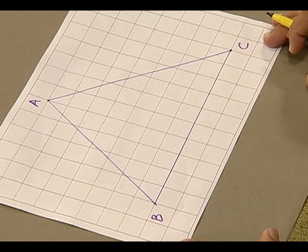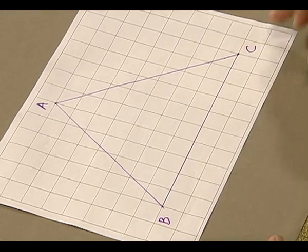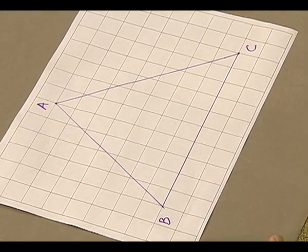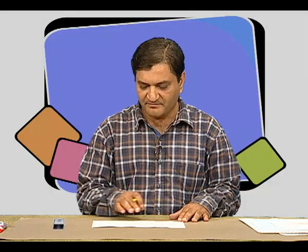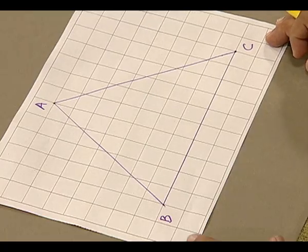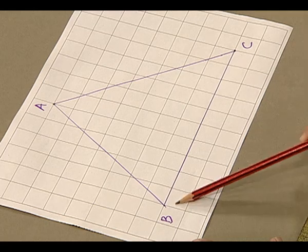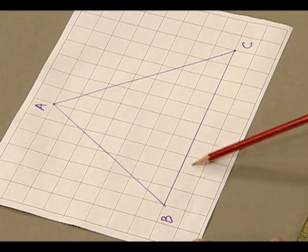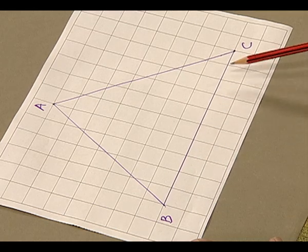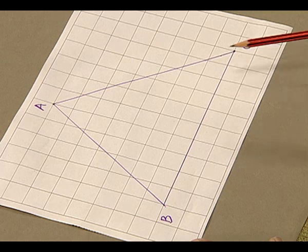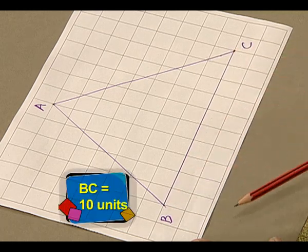Now we find the midpoint of side BC. To find the midpoint of side BC, we first measure its length: 1, 2, 3, 4, 5, 6, 7, 8, 9, 10. The length of BC is 10 units.